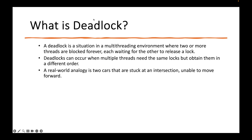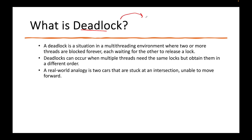The first question is: what is deadlock? In simple words, deadlock is some kind of an infinite loop where resources or people are getting stuck forever because they're waiting for each other to do something. Deadlock is a situation in multi-threading where threads are blocked forever because they're waiting for each other to release a resource.